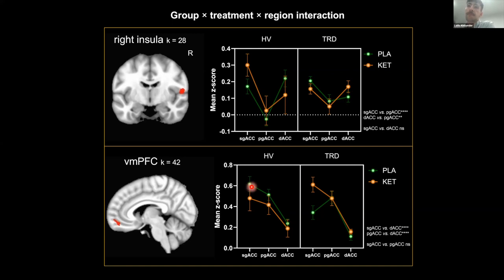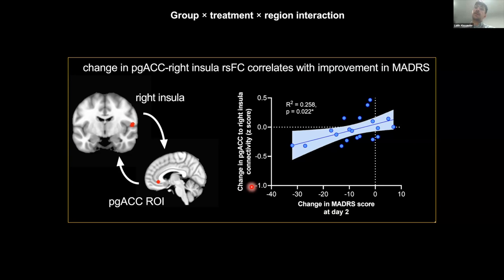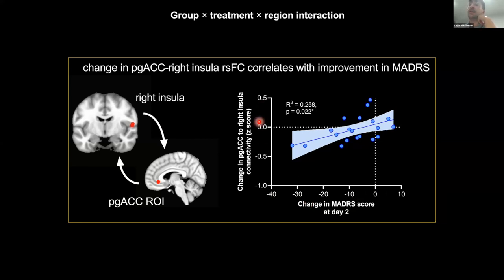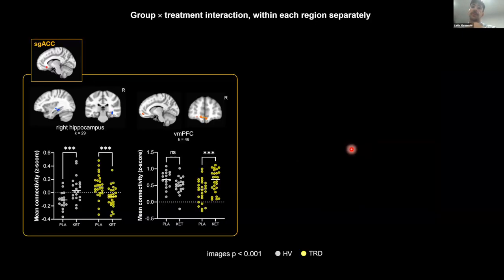We correlated changes in functional connectivity with changes in symptom scores. Perigenual ROI to right insular functional connectivity changes correlated with improvements in MADRS scores. Specifically, ketamine tended to increase perigenual connectivity to the right insula, and this correlated with the change in MADRS score across the cohort.